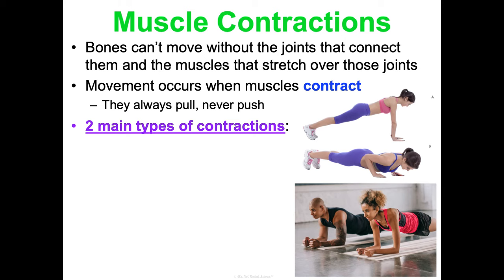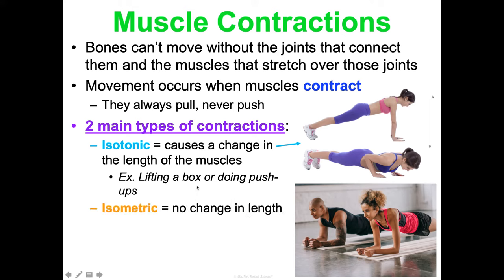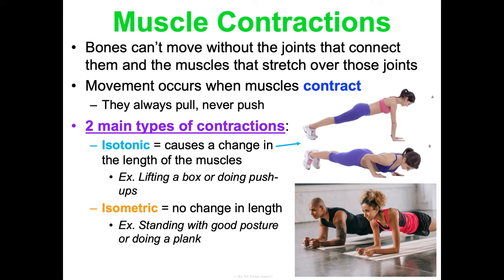There are two main types of muscle contraction. Isotonic contractions cause a change in the length of the muscle, like lifting a box or doing a push-up — the muscle length changes as movement occurs. Isometric contractions require no change in muscle length, such as maintaining good posture while standing or holding a plank position.